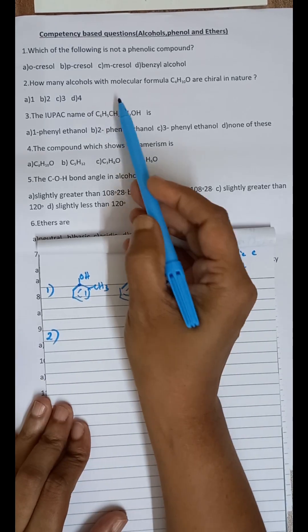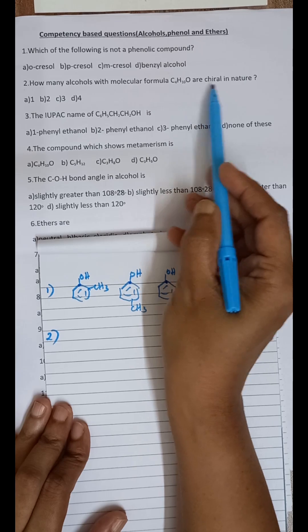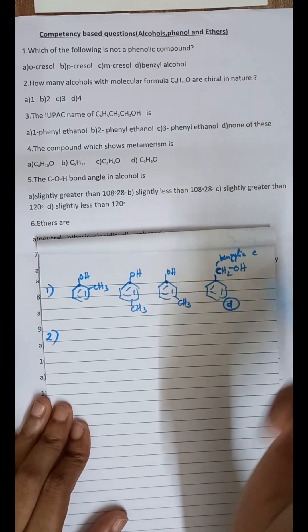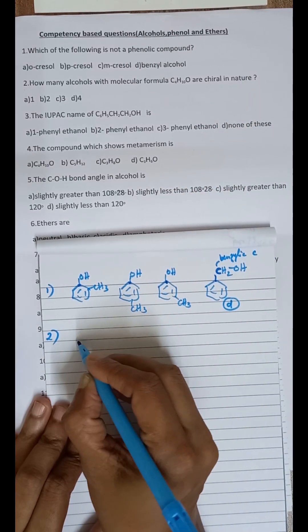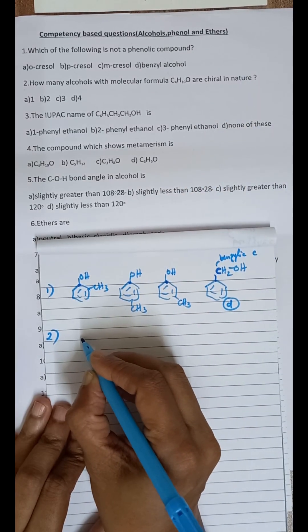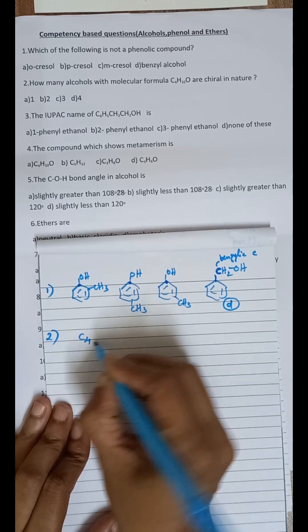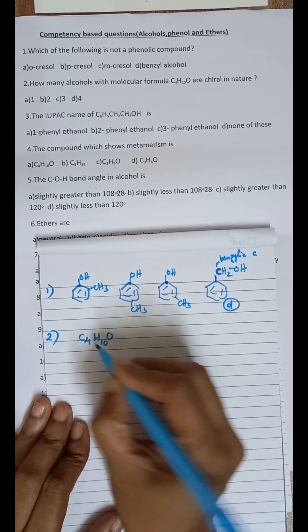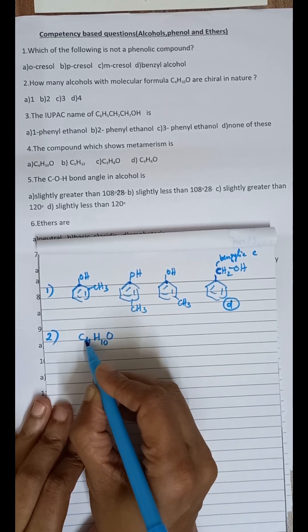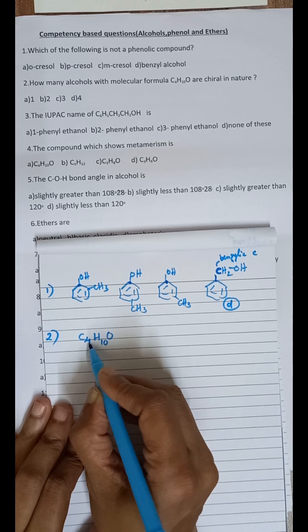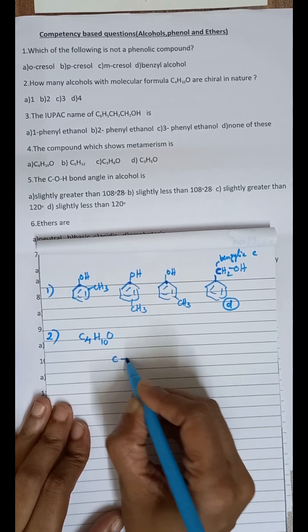Second question: how many alcohols with molecular formula C4H10O are chiral in nature? Let us see the different structures possible for an alcohol with the molecular formula C4H10O. Since there are 4 carbon atoms, these are butanol isomers.